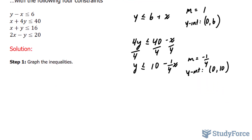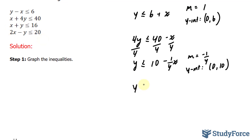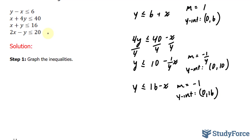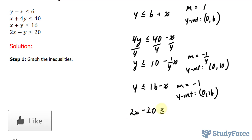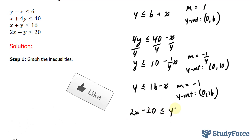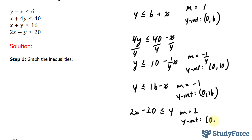Let's do the same thing for the next two. y ≤ 16 - x, where my slope is negative 1 and my y-intercept has the point (0, 16). Lastly, for this inequality, if I bring the y over and the 20 over, I end up with 2x - 20 ≤ y. Here, my slope is 2 and my y-intercept is (0, -20).